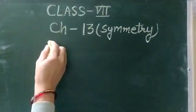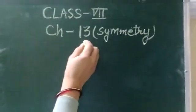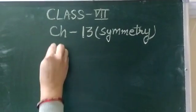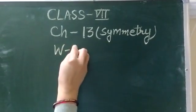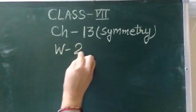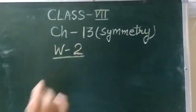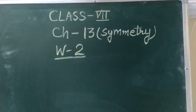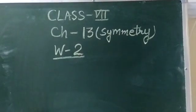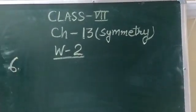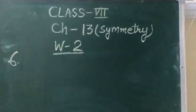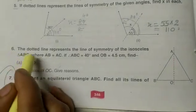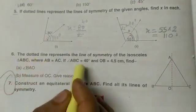Good morning students. We are doing Chapter 13, Symmetry. Last time we started Worksheet 2 and completed questions up to question 5. Today I will discuss question number 6 with you. The dotted line represents the line of symmetry.